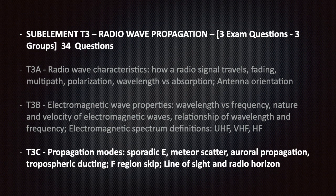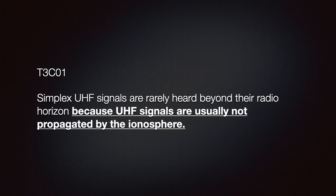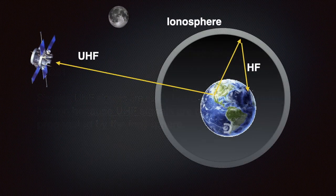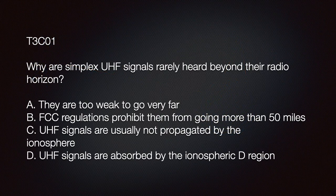We should know that simplex UHF signals are rarely heard beyond the radio horizon because UHF signals are usually not propagated by the ionosphere. While HF waves bounce off the ionosphere, UHF waves pass right through it. That's why it's common to see UHF uplinks used in amateur satellites.